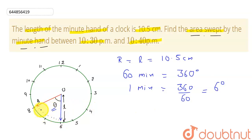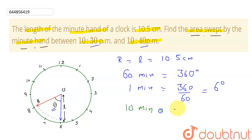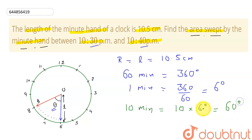From 10:30 to 10:40, we have covered 10 minutes. So in 10 minutes, the angle covered will be 10 multiplied by 6 degrees, which equals 60 degrees. So theta is 60 degrees.